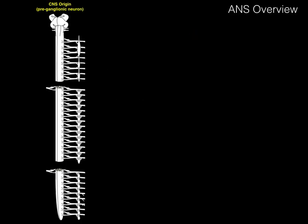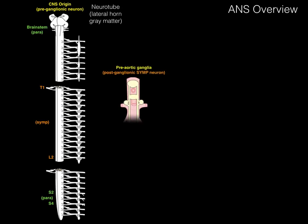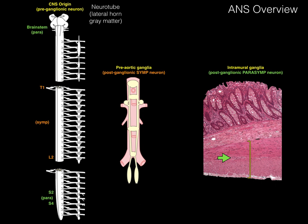In review, the central nervous system is where all autonomics originate — the preganglionic neurons originate in the neural tube's lateral horn gray matter, or a homologous structure in the brainstem. The brainstem and S2, 3, 4 are the parasympathetic origins, while sympathetics arise between T1 and L2 spinal cord levels. For the second-order neuron: the pre-aortic ganglia is where postganglionic sympathetic neurons arise, and the intramural ganglia is where postganglionic parasympathetic neurons arise — both derived from neural crest cells.